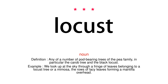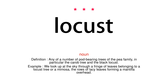Noun. Definition: Any of a number of pod-bearing trees of the pea family, in particular the carob tree and the black locust. Example: We look up at the sky through a fringe of leaves belonging to a locust tree or a mimosa, the rows of lacy leaves forming a mantilla overhead.